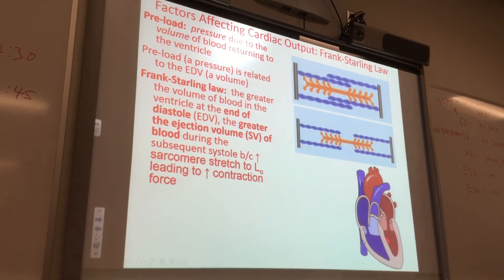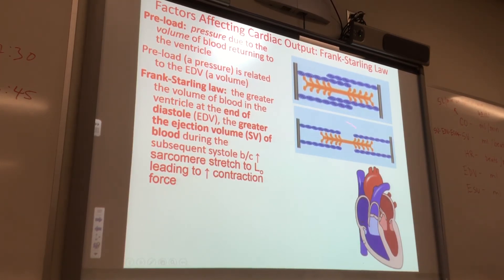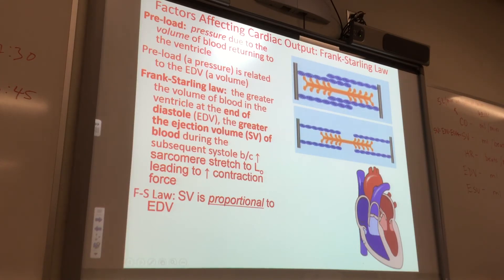As the ventricles fill with blood, those Z-lines get further apart. If you're exercising and you get the maximum volume of blood in your ventricles, the sarcomeres in the muscle cells will be at optimal length. Frank-Starling Law mathematically: stroke volume is proportional to end-diastolic volume.